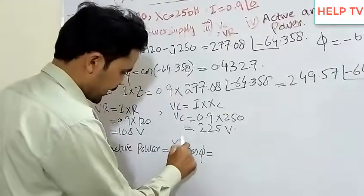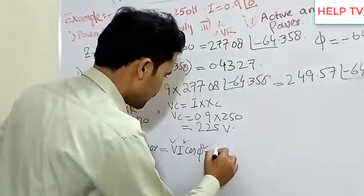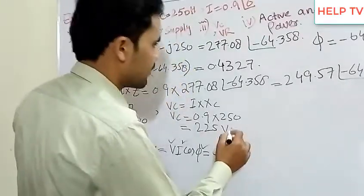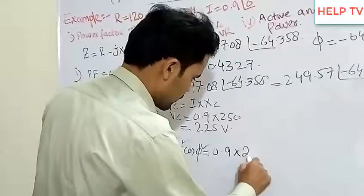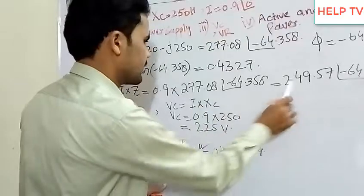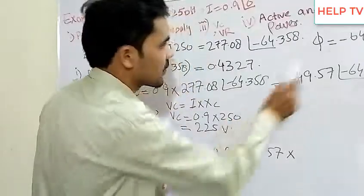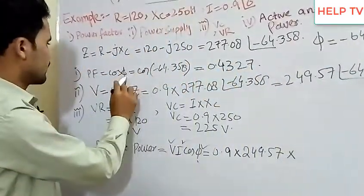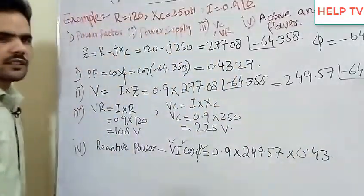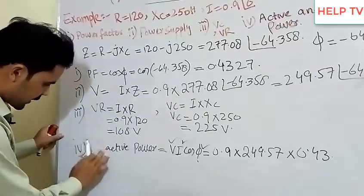Active power equals VI cos of phi. We have I which is 0.9, V is 249.57, and cos of phi is 0.43. This calculation gives us the active power value.